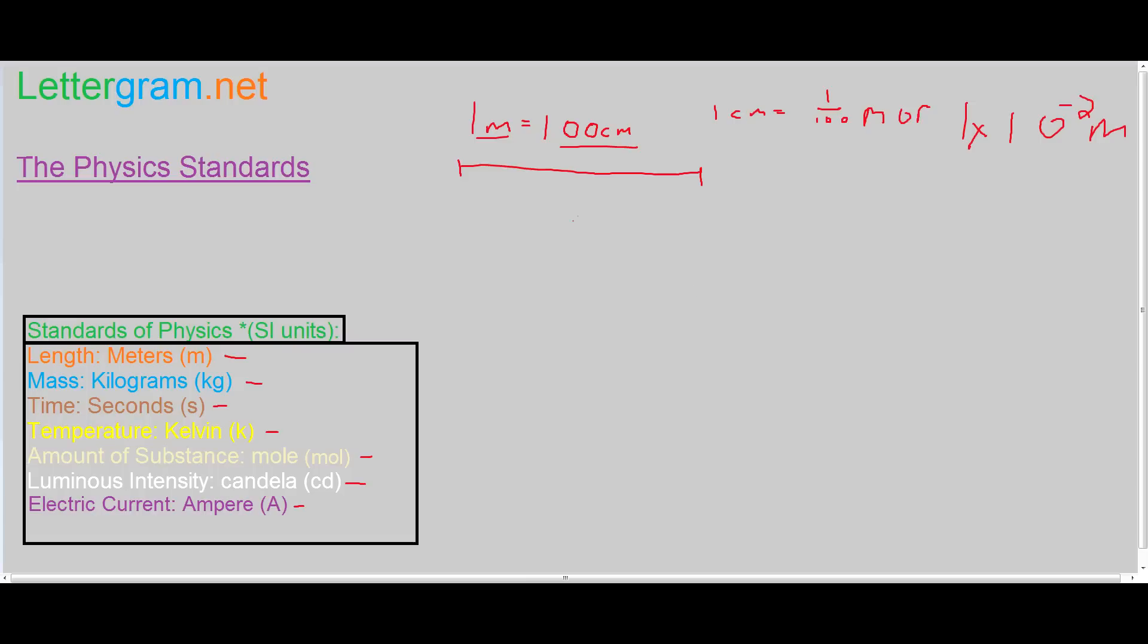So the easiest way to convert this is, let's say we have one meter and we want to convert it to centimeters. We know one meter is equal to 100 centimeters, so right now these cancel out and that'll equal 100 centimeters. This is how it usually works.